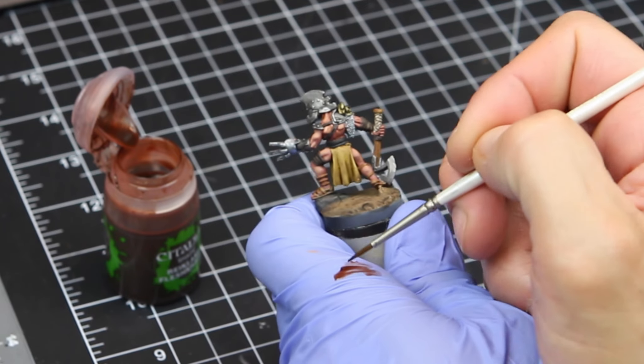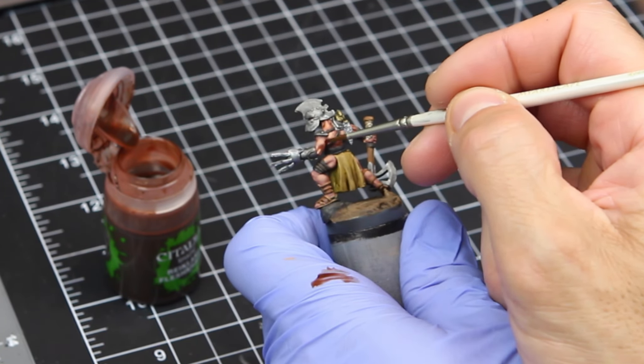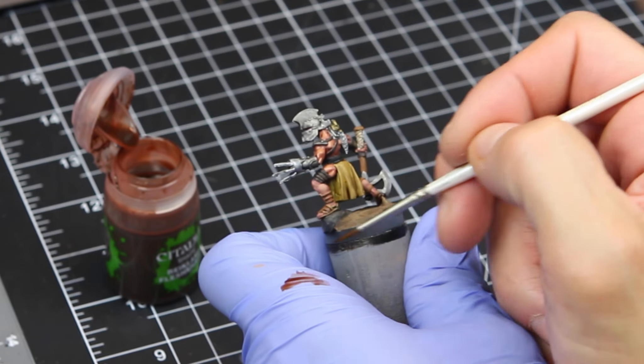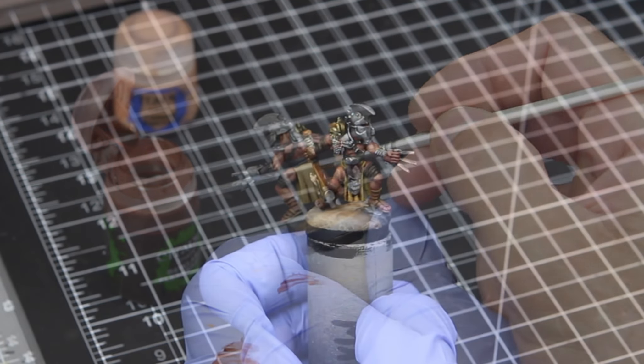And when you place that wash, you know, you could puddle it up, I guess, a little bit more in the spots you want to be quite a bit darker. But again, you want to have a nice thin coat over most of the model.